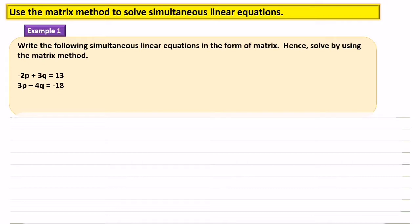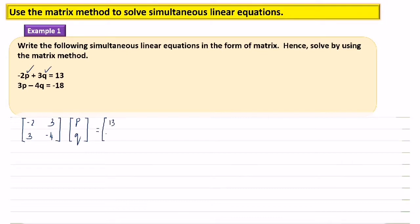First, we need to write the matrix equation. The first bracket contains only numbers. The second bracket contains the variables p followed by q, so pq. This equals 13 and negative 18.